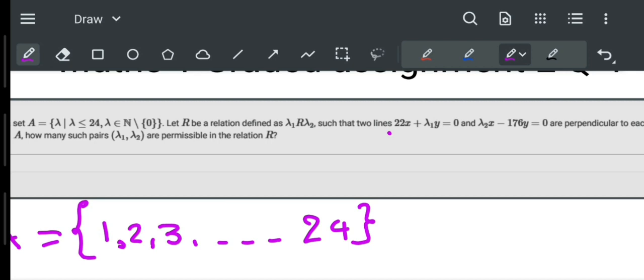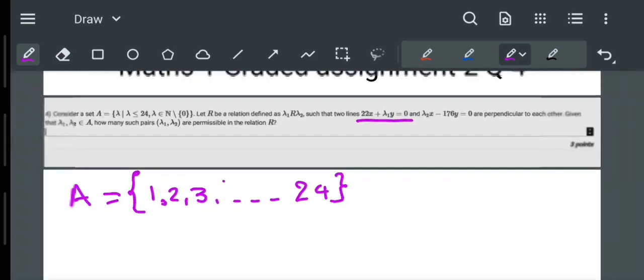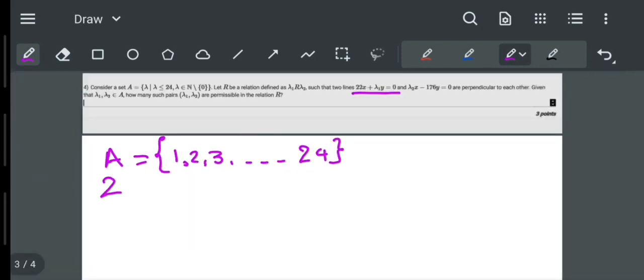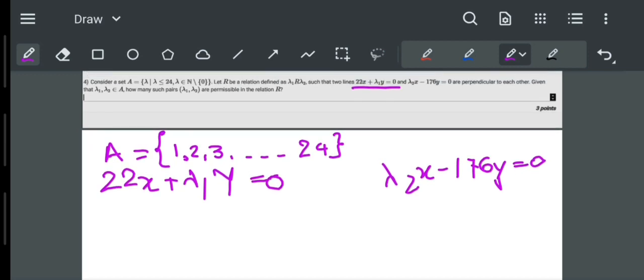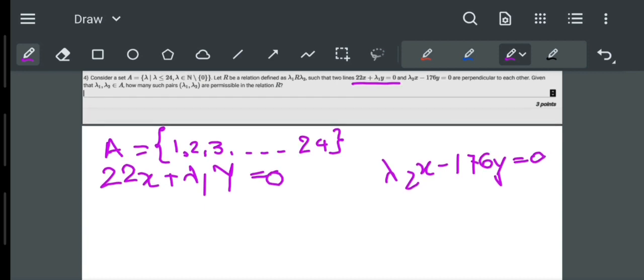Let R be the relation defined as lambda 1 related to lambda 2 such that two lines, 22x plus lambda 1y equals 0 and lambda 2x minus 176y equals 0, are perpendicular to each other, given that lambda 1 and lambda 2 belong to A. How many such pairs of lambda 1, lambda 2 are permissible in the relation R?